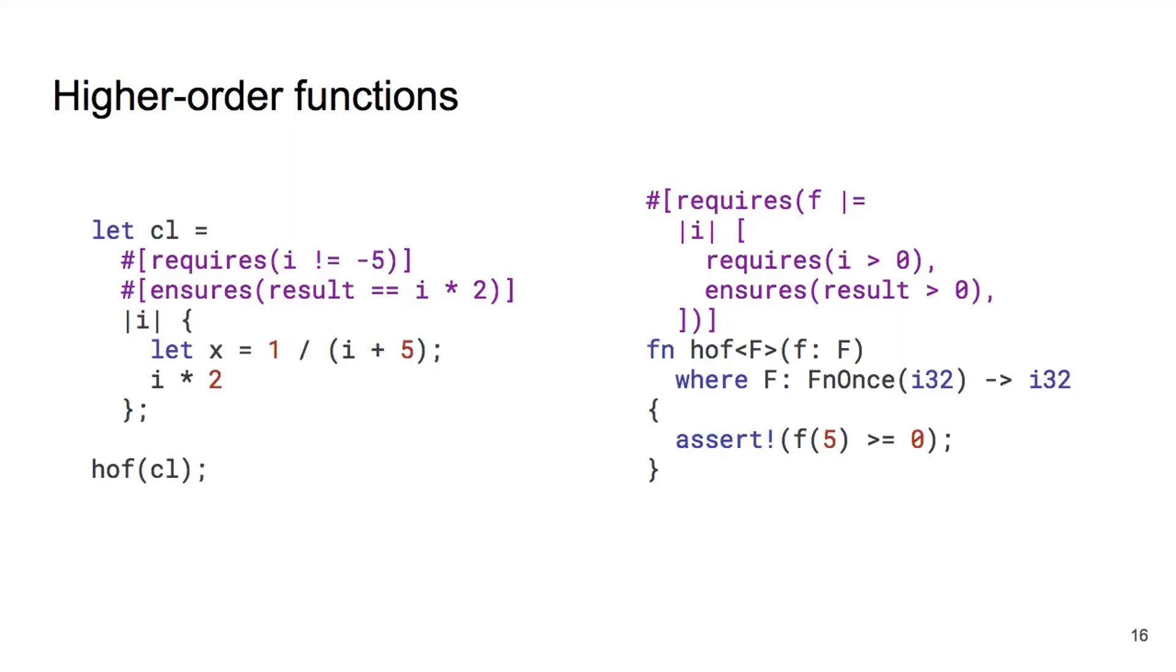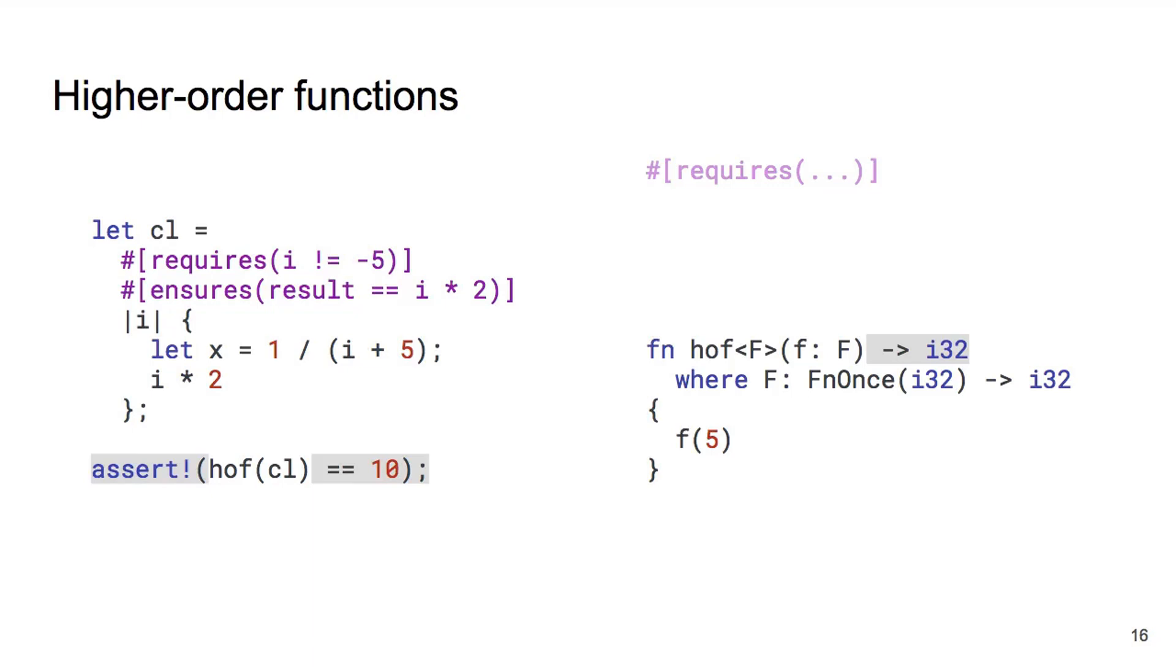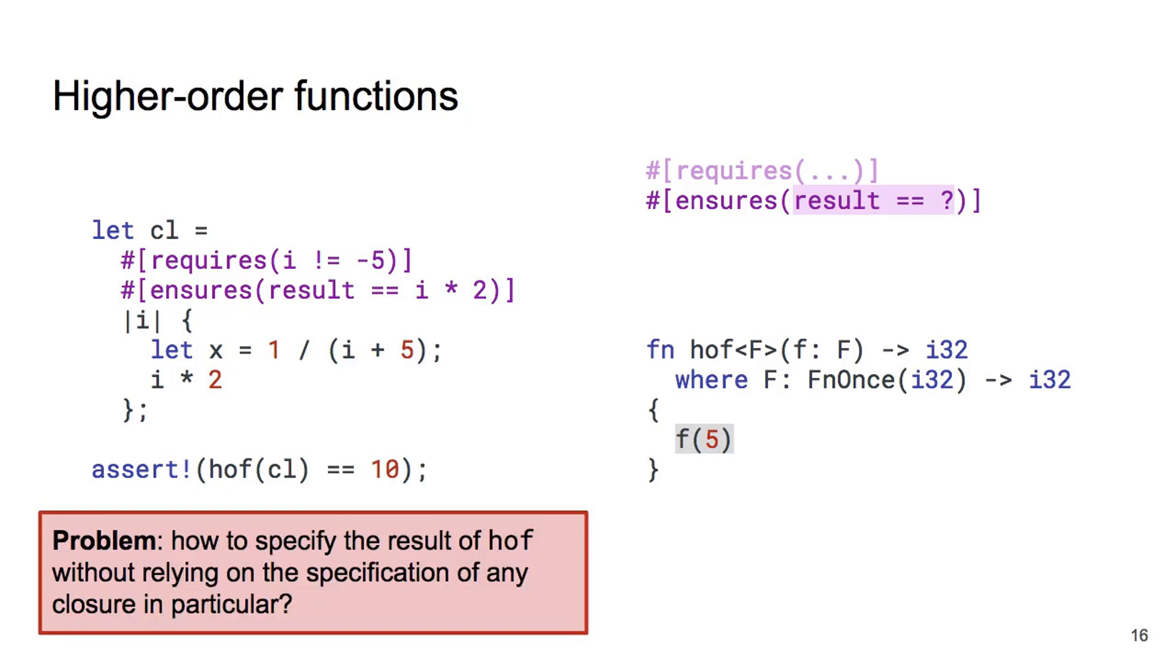Let's get back to our example. We can hide the precondition for now, and make a small change to the code. Instead of making an assertion as part of HOF, we return the value of the closure call, and make a more precise assertion at the call site. With the specific closure we have given to HOF, we know the result will be 10. But how do we express this property as a postcondition of HOF? We would like to be able to talk about its result in terms of a call to a closure, but we cannot rely on the specification of any particular closure.